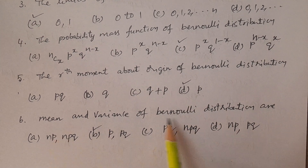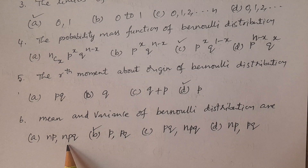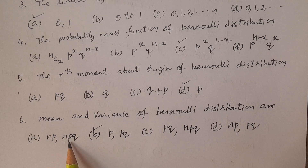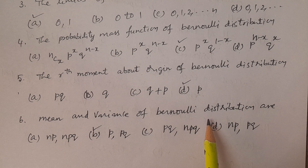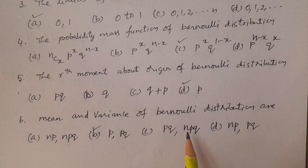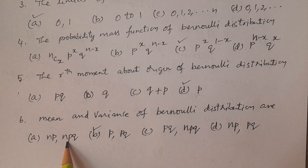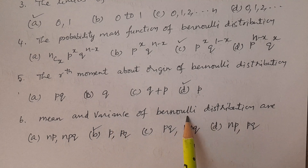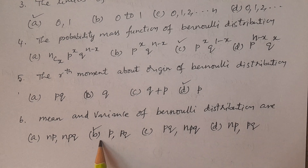Question number six: Mean and variance of Bernoulli distribution. The mean and variance of binomial distribution are np and npq. If you substitute n = 1, you get the Bernoulli distribution. So the mean is p and variance is pq for Bernoulli distribution. Option B is p, pq — that is the correct answer. Options C and D are np,pq and pq,npq — those are incorrect.